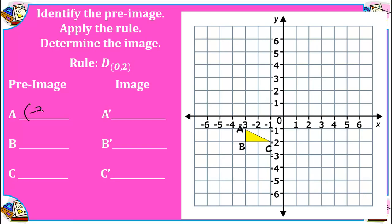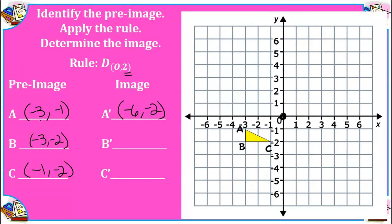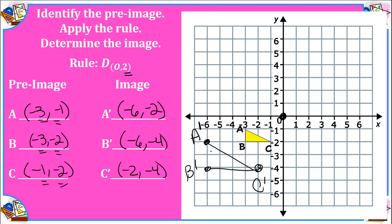Pre-image: A is (−3, −1), B is (−3, −2), C is (−1, −2). The scale factor is 2 and the center of dilation is the origin, so all coordinates are pushed away by a factor of 2. Multiplying by 2: A' is (−6, −2), B' is (−6, −4), and C' is (−2, −4). We connect our points to form the new triangle.